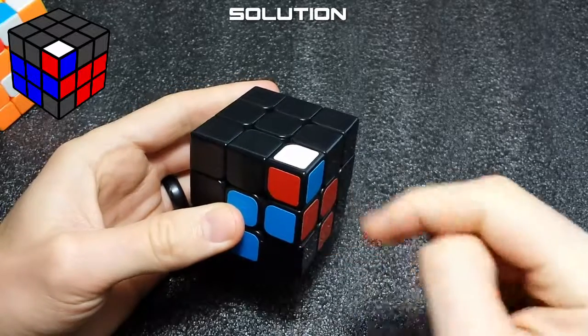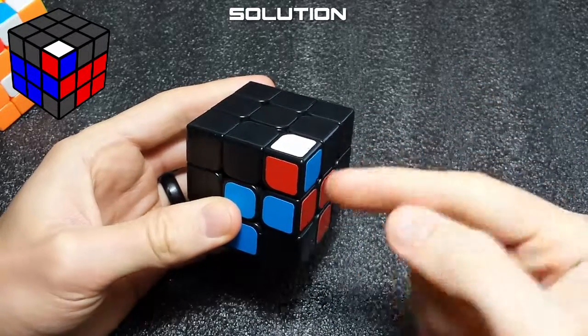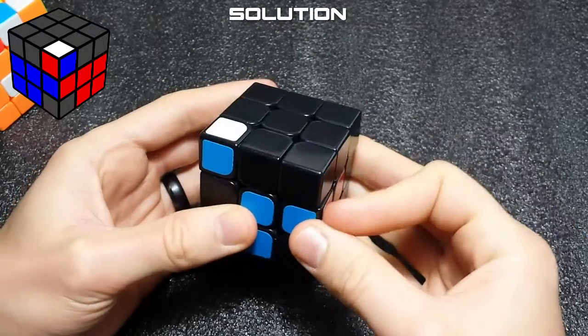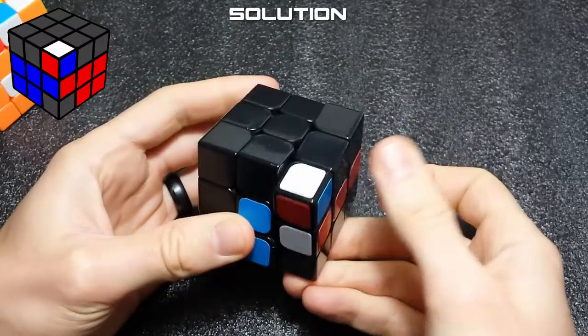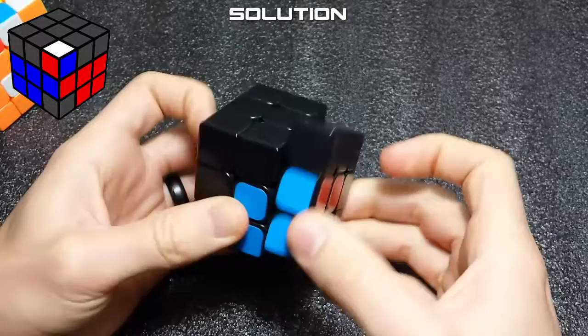If you do the reverse of a sexy move, then you can create a pair out of this case. What reverse sexy move is: if you move this away, do that twice, that will create your pair and then the third one will insert it.